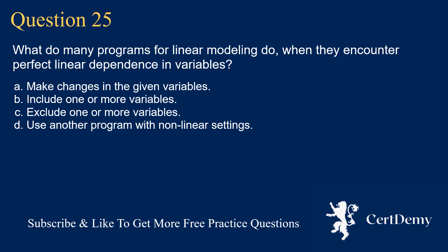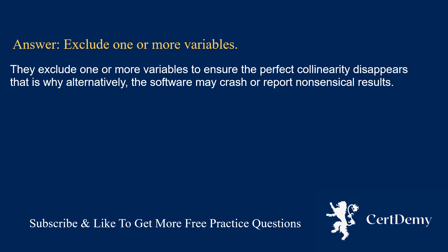Question 25. What do many programs for linear modeling do when they encounter perfect linear dependence in variables? Options: make changes in the given variables; include one or more variables; exclude one or more variables; use another program with nonlinear settings. The answer is: exclude one or more variables. They exclude one or more variables to ensure the perfect collinearity disappears; alternatively, the software may crash or report nonsensical results.